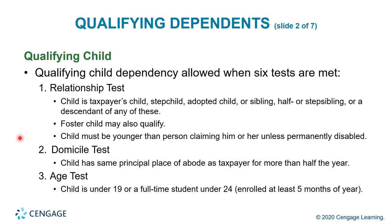A qualifying child dependency is allowed when six tests are met: the relationship test, domicile test, age test, joint return test, citizen test, and self-support test. Under the relationship test, the child is the taxpayer's child, stepchild, adopted child, sibling, half or step sibling, or a descendant of any of these; a foster child may also qualify. The child must be younger than the person claiming them unless permanently disabled. The domicile test requires the child to have the same principal place of abode as the taxpayer for more than half the year. The age test requires the child to be under 19, or a full-time student under 24 enrolled at least five months of the year — it is very important not to disqualify a child simply because they are over 19 without checking the full-time student exception.